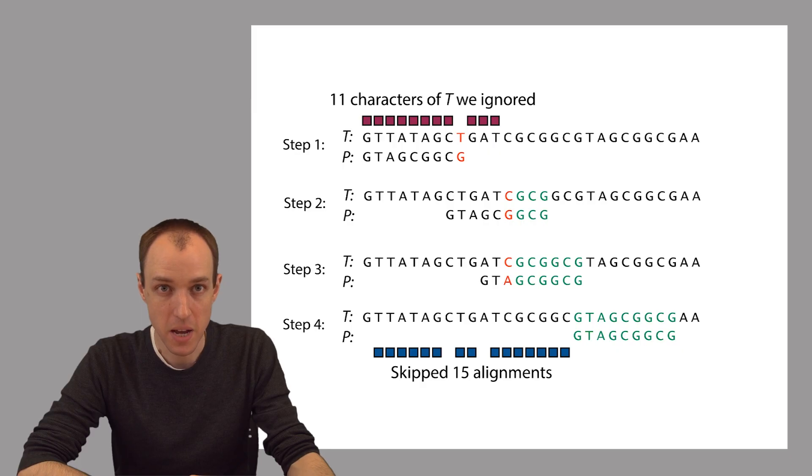Even in the best case, naive exact matching is never going to skip an alignment, and there's never going to be a character of the text T that it fails to examine.